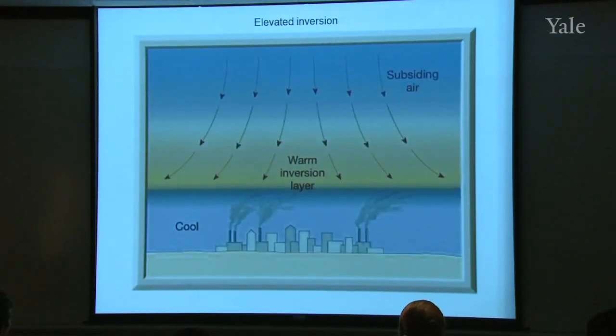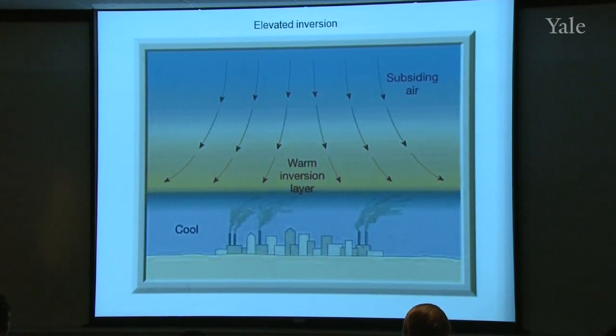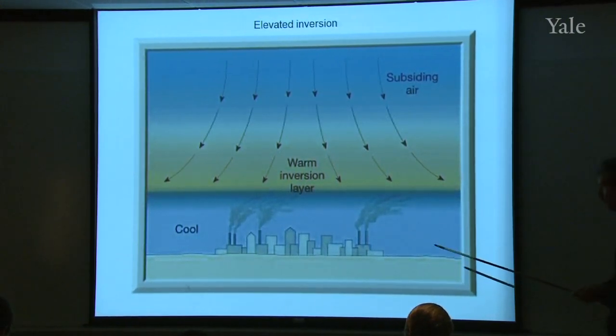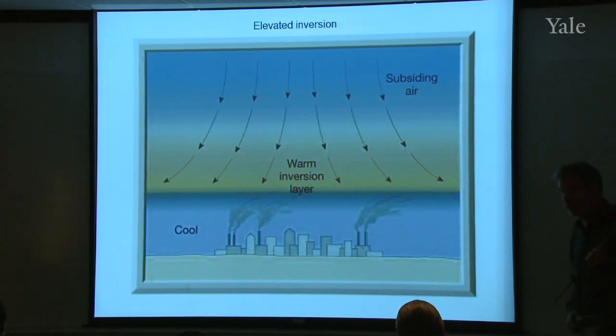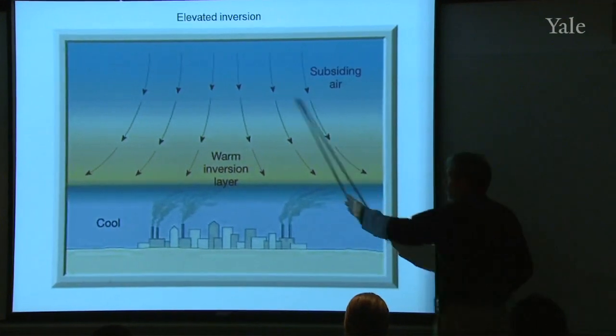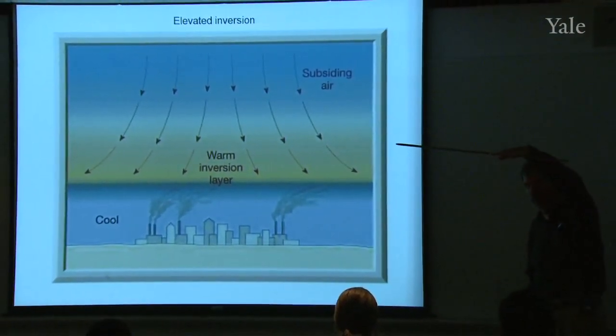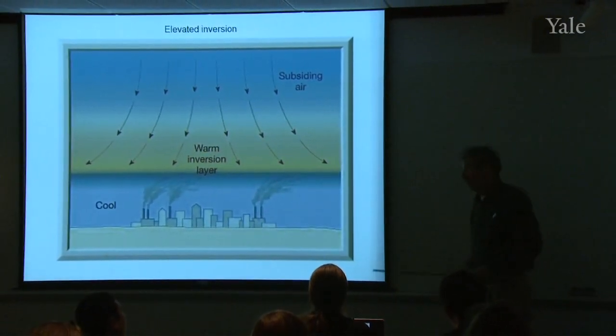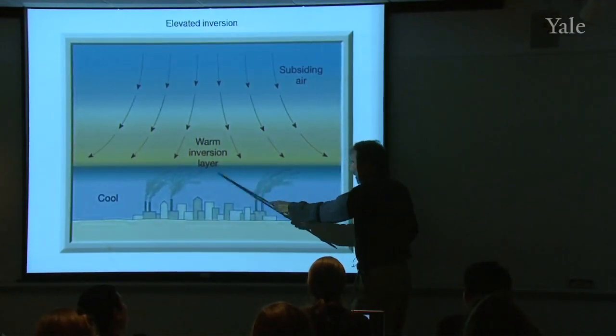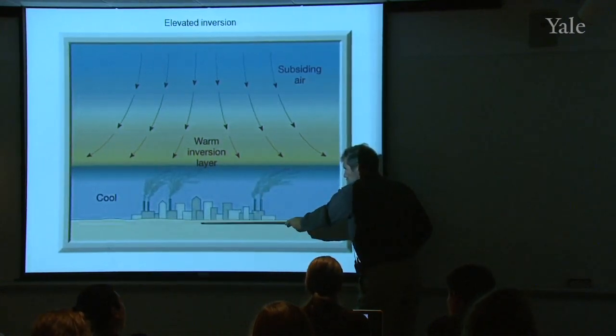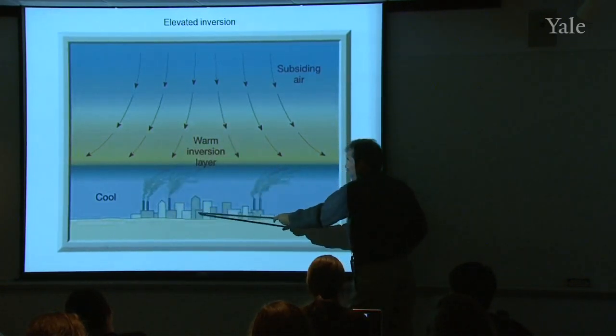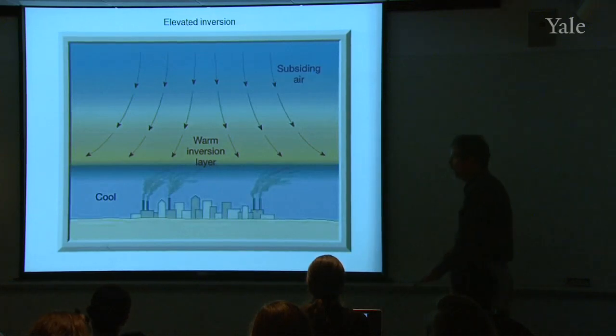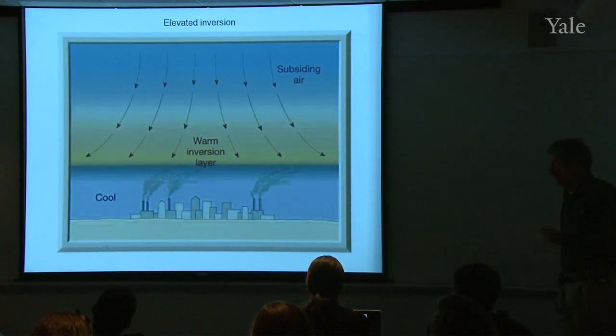Now, you can also get what's called an elevated inversion. Whenever you have slow subsiding air up through the troposphere, as you do today, whenever you have high pressure and clear skies, you can be pretty certain that there's very slow subsidence. The air is slowly descending through the troposphere. Well, that air cannot descend through the Earth's surface, because the Earth's surface is solid. So it has to spread out. And you'll get warming here, but not warming at the surface. So you end up in this subsidence situation, creating an elevated inversion.